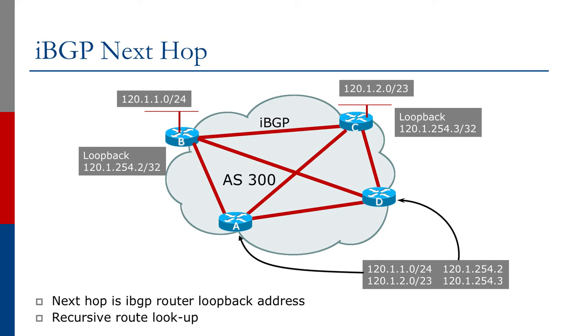Looking at iBGP first: if we introduce a prefix — say 120.11.24 — into our iBGP at router B, and go to another router in the autonomous system such as router D, we see that prefix 120.11.24 has a next hop address of 120.1.254.2, which is the loopback address of router B. Remember, we set up iBGP between the loopback interfaces. Best practice is between the loopbacks, which means we're not dependent on any of the physical infrastructure on the network.